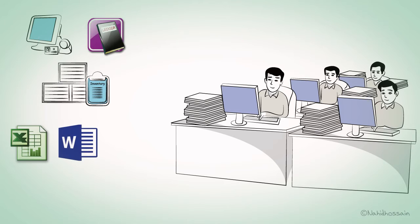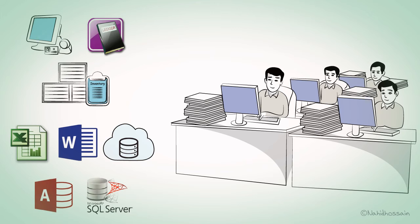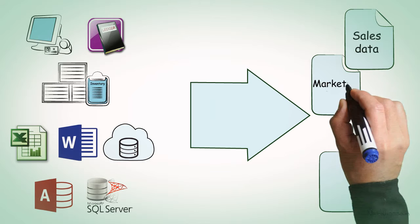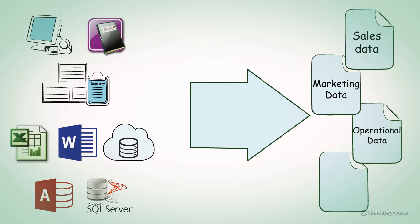Some data is in Excel, Word, Web, Access, and SQL Server. The data was split up into four main categories: sales data, marketing data, operational data, and financial data.